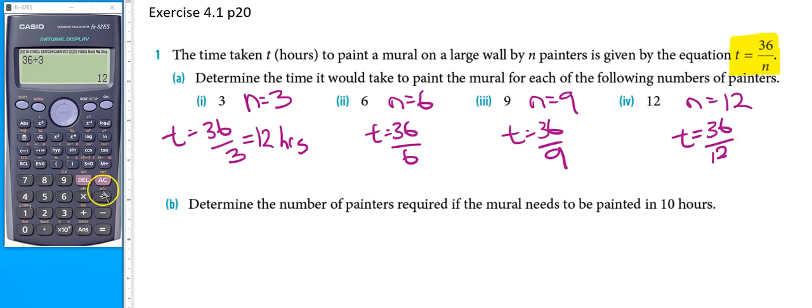In our second case, 36 divided by 6 equals 6 hours.